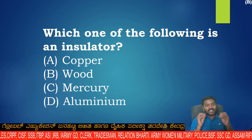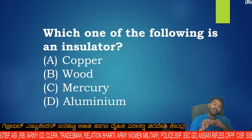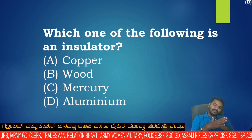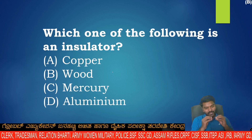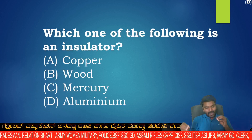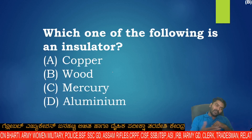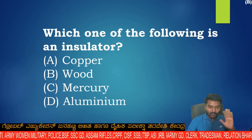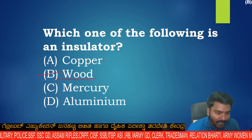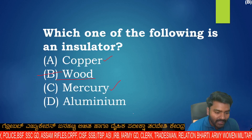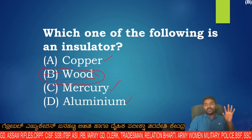Which one of the following is an insulator? An insulator does not allow current to pass. Examples: wood does not allow current to pass, but copper and mercury do allow current to pass.